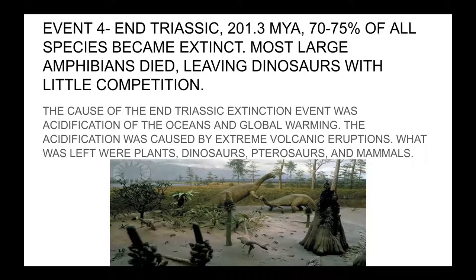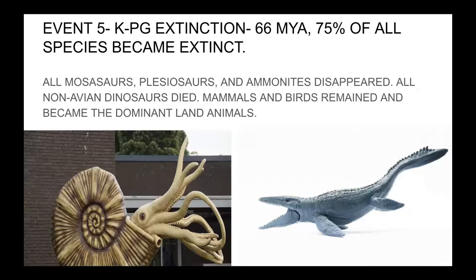Event number five is the KPG extinction — they used to call it KT, now they call it KPG. K stands for Cretaceous, PG stands for Paleogene. This was 66 million years ago. 75% of all species became extinct, including the ammonite and the mosasaur. All non-avian dinosaurs died, and mammals and birds remained and became the dominant land animals. This was caused by an asteroid that hit off the coast of the Yucatán Peninsula in the Gulf of Mexico.